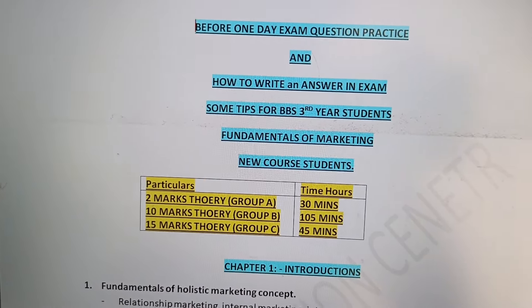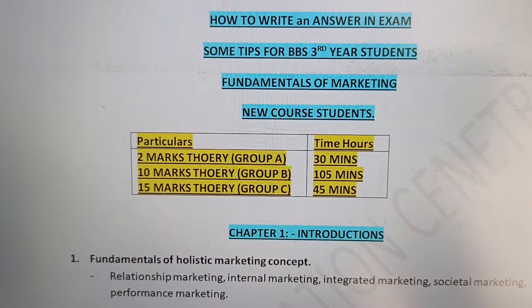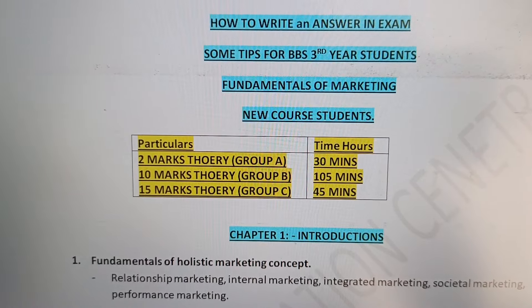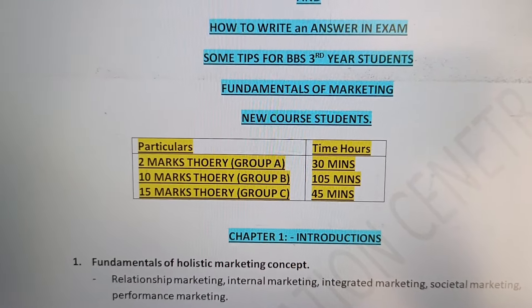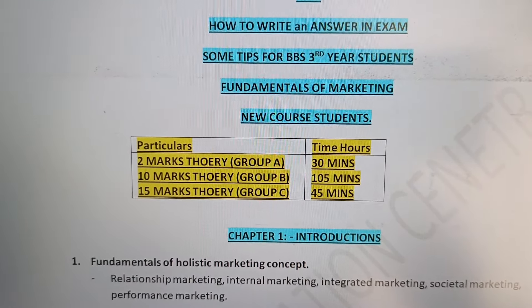The first question paper includes 10-mark theory. Group B is about 105 minutes. You can cover all the marks in 10 marks, or you can do a question in 45 minutes — a long question. You can also do a question in Group C.